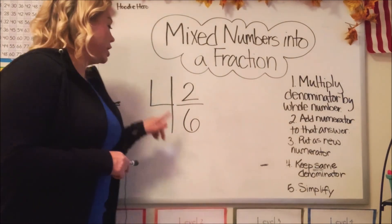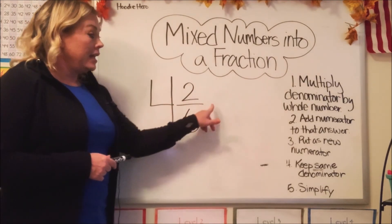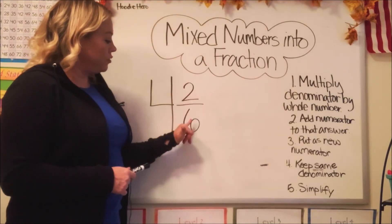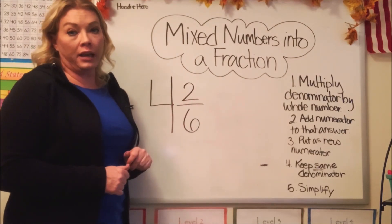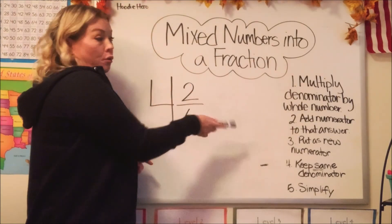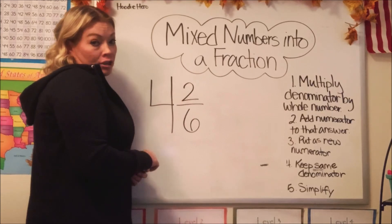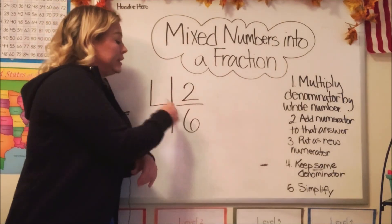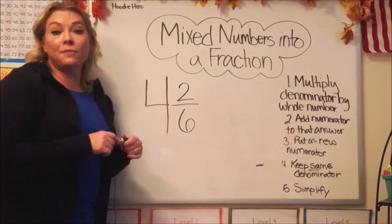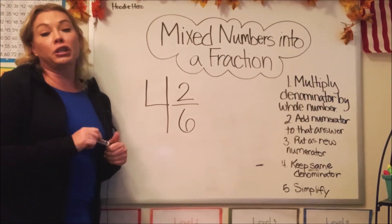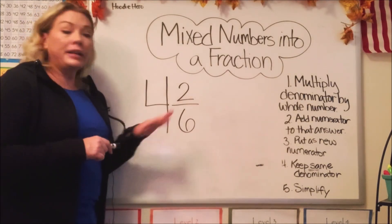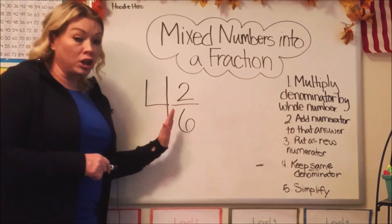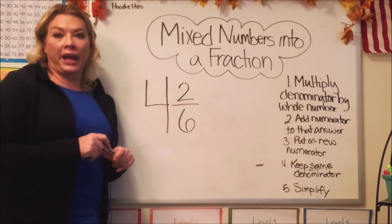Here is our third problem: turning the mixed number four and two-sixths into a fraction. I put this one up for a reason, because some of you may already know that you could simplify two-sixths. I'm going to show you that you could simplify it before you do the steps, or simplify it after, and you'll get the same answer. If you simplify before, the steps might be easier because you'll be dealing with smaller numbers, which are easier to multiply.